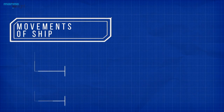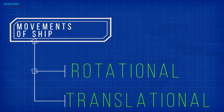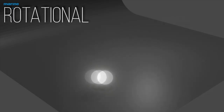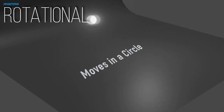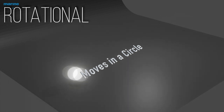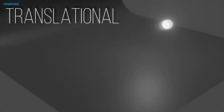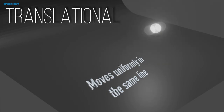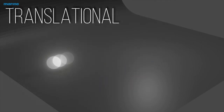The movements of the ship can be divided into two sets: rotational motion and translational motion. Rotational motion occurs if every particle in the body moves in a circle about a single line, and translational motion occurs if all points of a moving body move uniformly in the same line or direction.